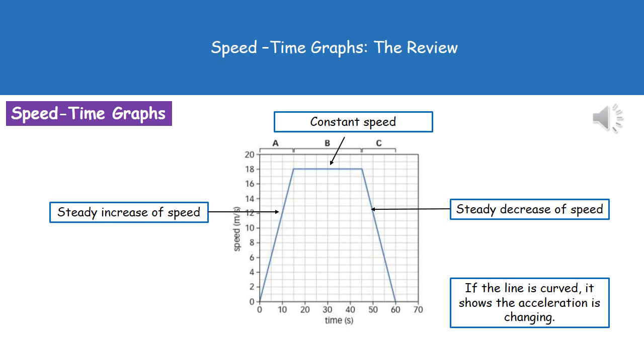First, if we have a look at the section marked A on our graph, what we can see there, because it is a diagonal line, is a steady increase in speed. When we get to point B on our graph, that horizontal line represents a constant speed, and then when we come to part C, we can see that the speed is actually decreasing.